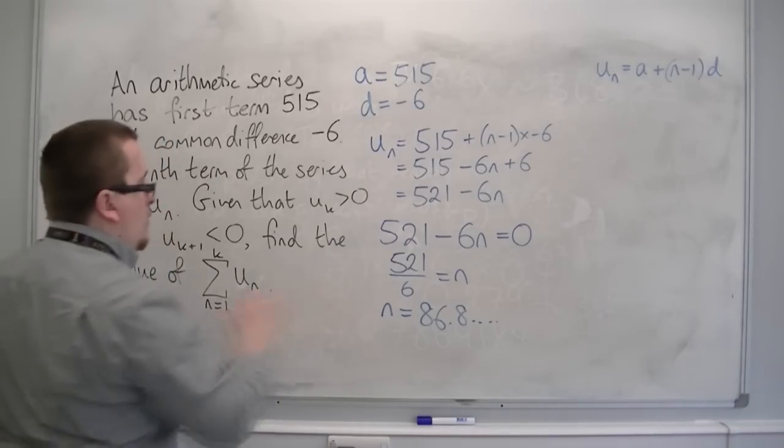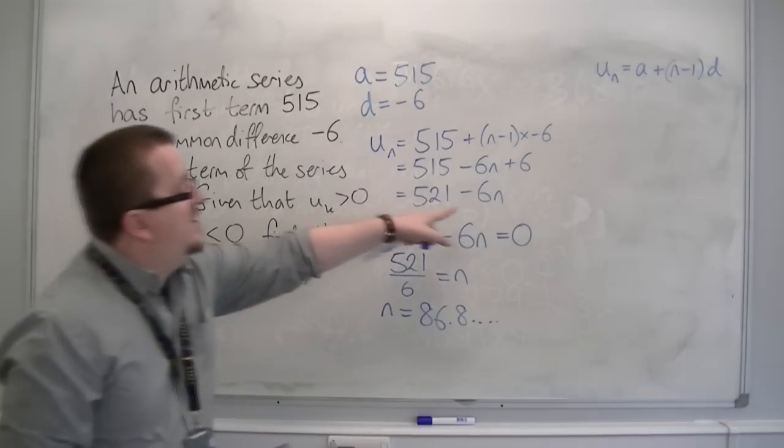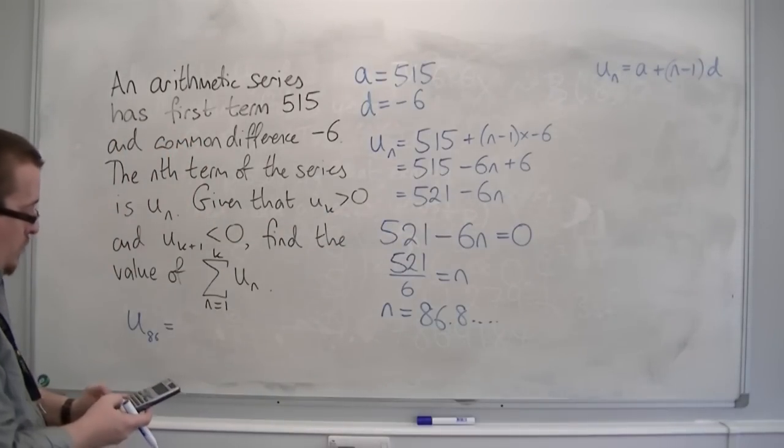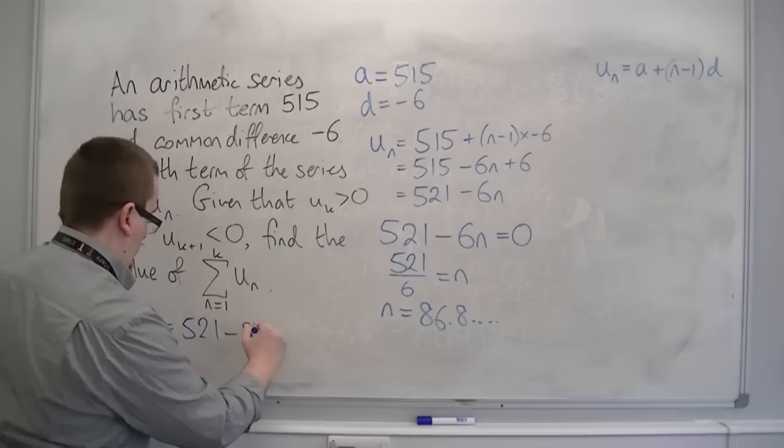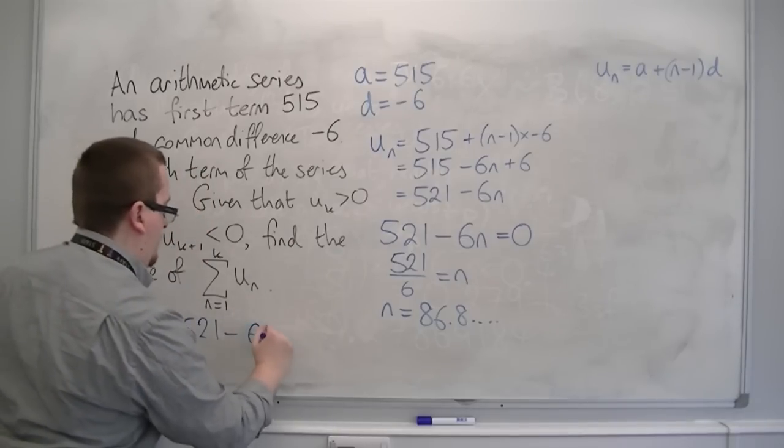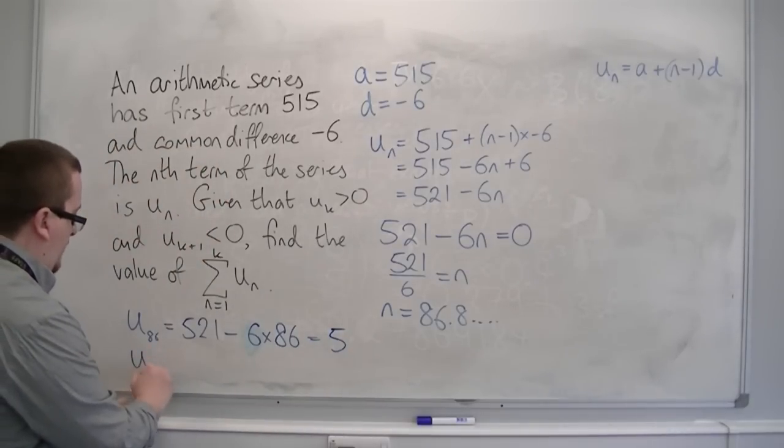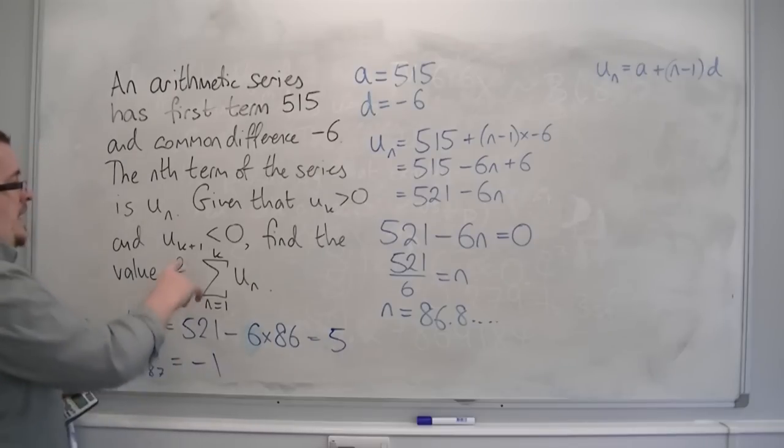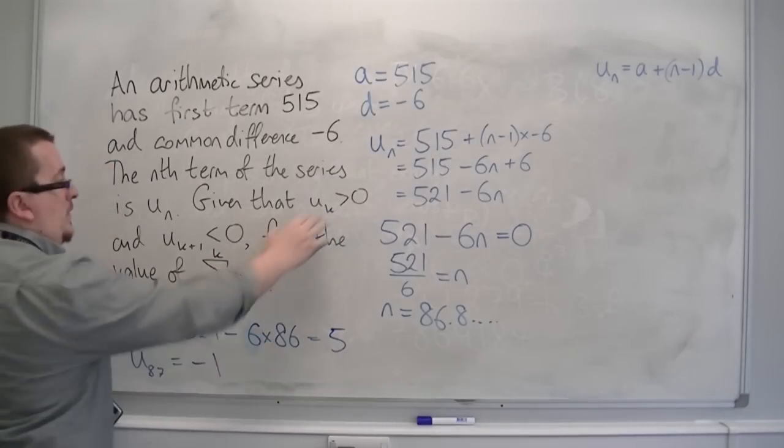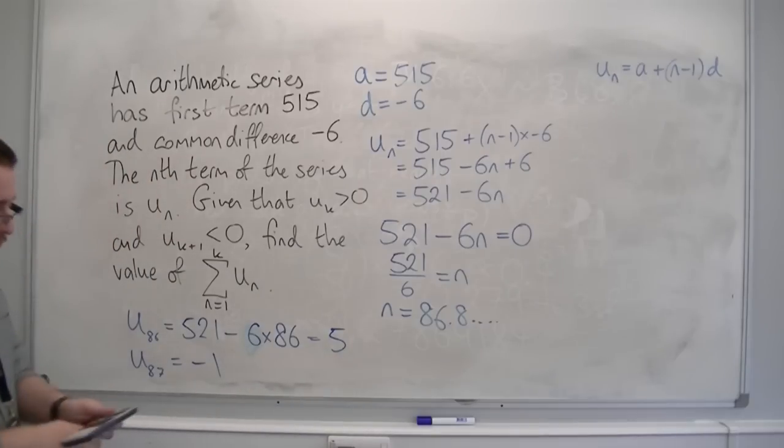So if I look at when n is 86, so u_86, the 86th term, I'm putting 86 into this equation. So 521 - 6×86, and that's 5. And so the next term will subtract 6 from that, and I get -1. So, in other words, k is 86 here. It's the 86th term, which is the last positive term.